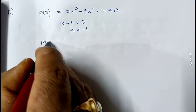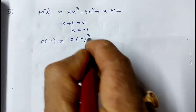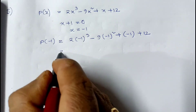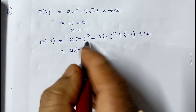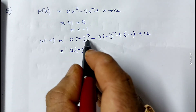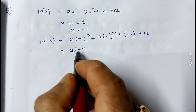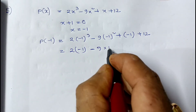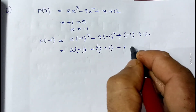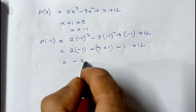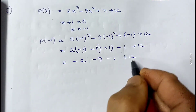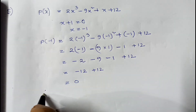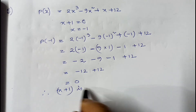We replace x by minus 1. So p(minus 1) equals 2 times (minus 1) cubed minus 9 times (minus 1) squared plus (minus 1) plus 12. Since the power of the first term is odd, it gives minus 2, and since the power of the second term is even it gives minus 9. So we have minus 2 minus 9 minus 1 plus 12, which gives minus 12 plus 12 equals 0. Therefore x plus 1 is a factor of p(x).